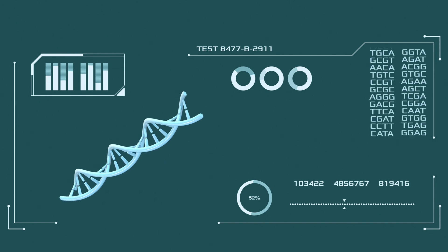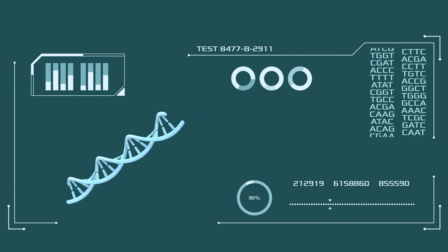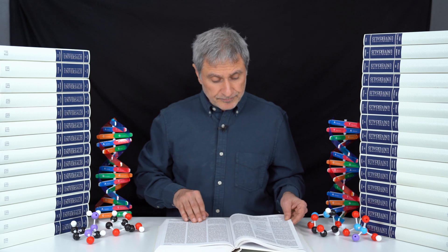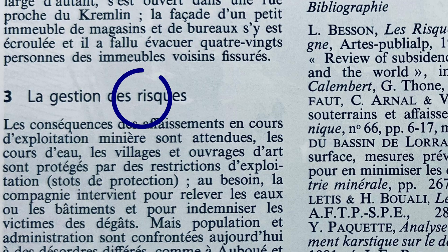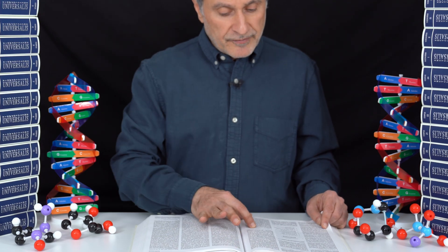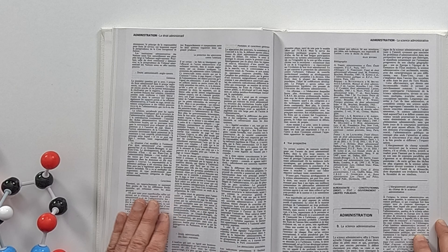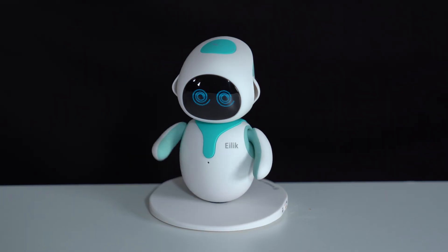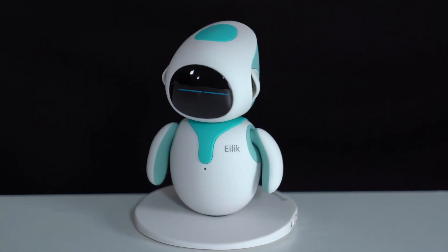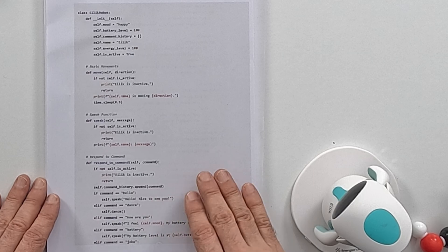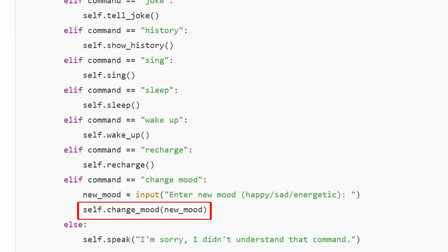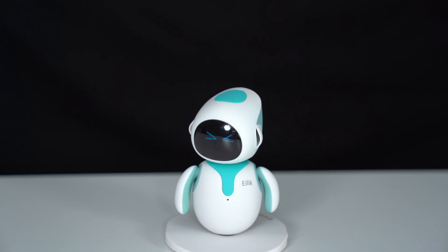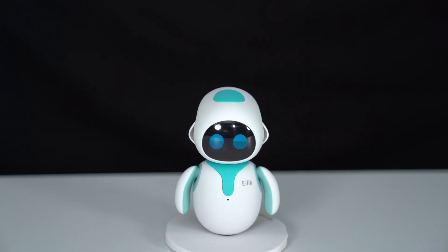What would happen if one word was wrong in all this information? I open a page. If there was a correction in this word, if it were written incorrectly, or if this paragraph and that paragraph were replaced, or if these pages changed places — this was the software of this robot. If this code is replaced by that code, or if I delete a code, the robot's behavior will change and some parts will malfunction.